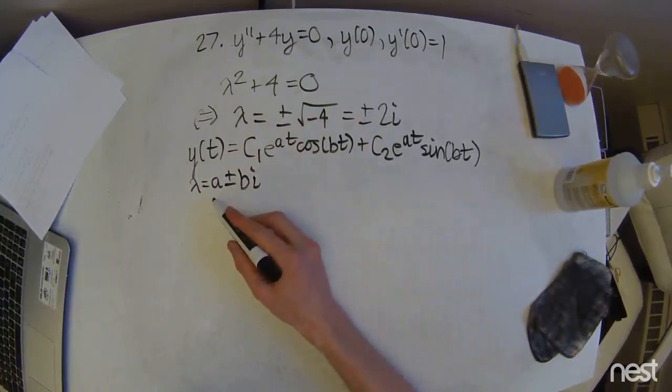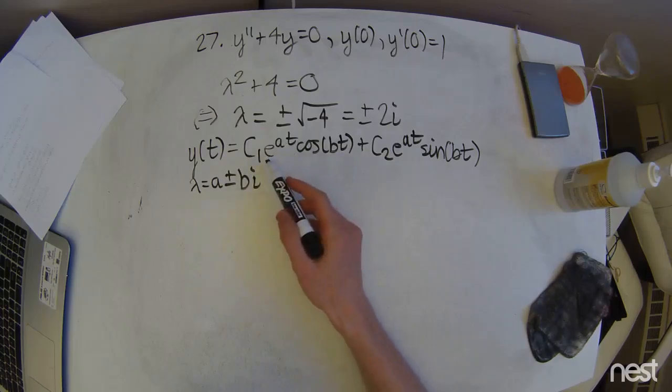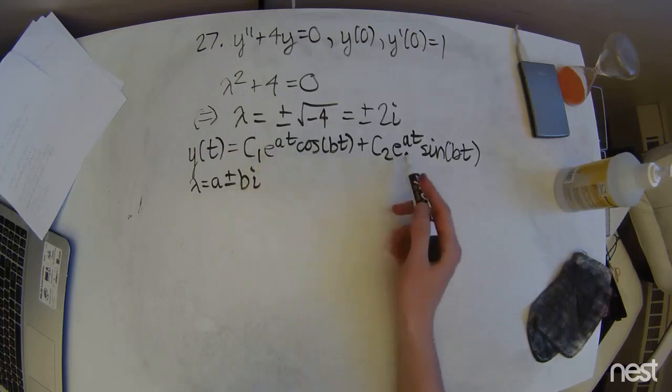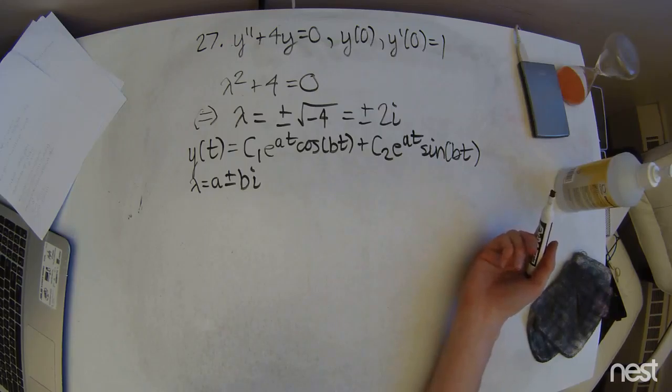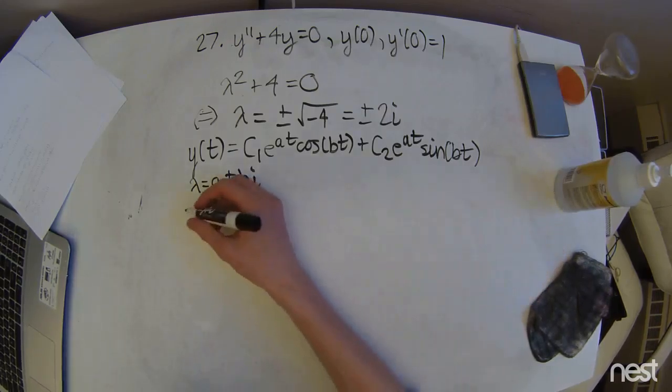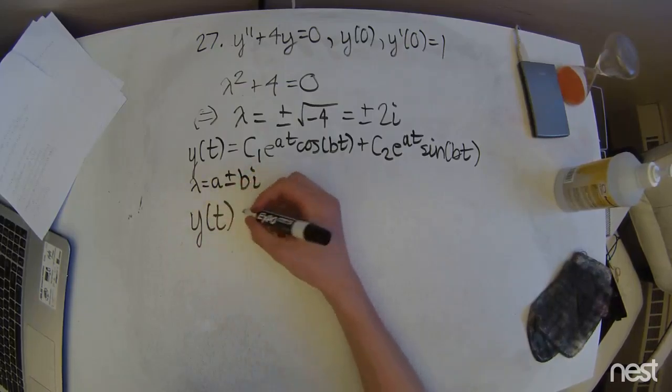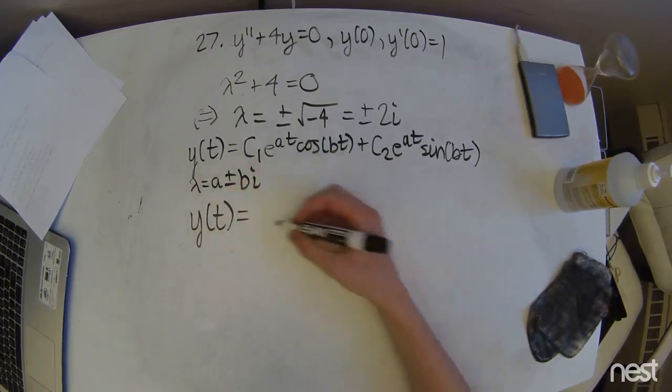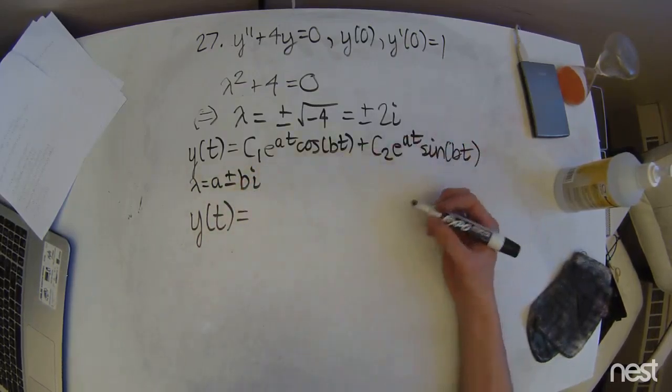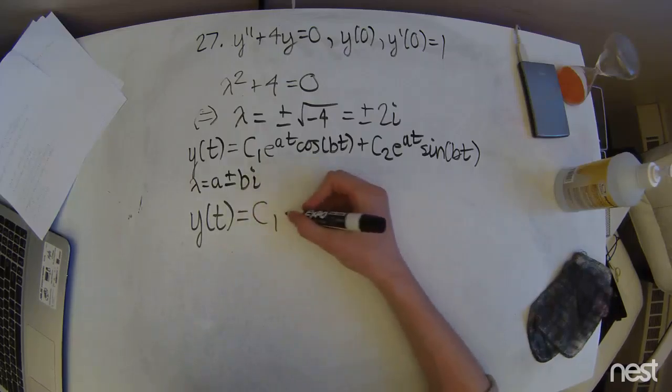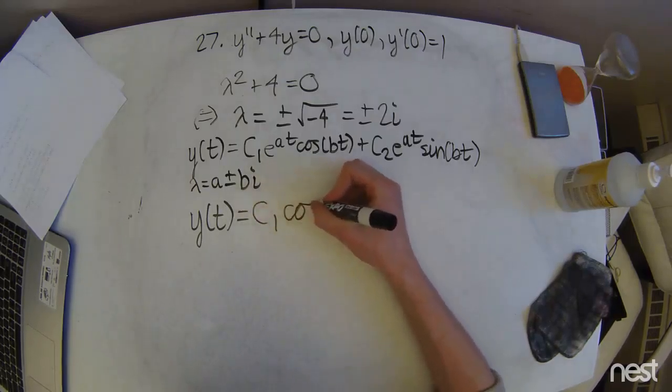So a in this case is 0, so that's going to end up just turning each of these exponential terms into 1. And that's pretty convenient. So our solution, at least our partial solution without the integrating constants solved, is going to look like this.